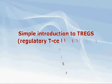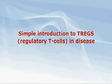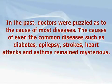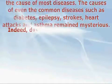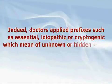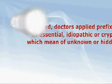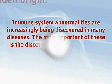A simple introduction to TREGS — regulatory T-cells in disease. In the past, doctors were puzzled as to the cause of most diseases. Some diseases were clearly due to infection; however, the cause of even common diseases such as diabetes, epilepsy, stroke, heart attacks, and asthma remained mysterious. Doctors applied prefixes such as 'essential,' 'idiopathic,' or 'cryptogenic,' which mean of unknown or hidden origin — for example, essential hypertension and idiopathic epilepsy.